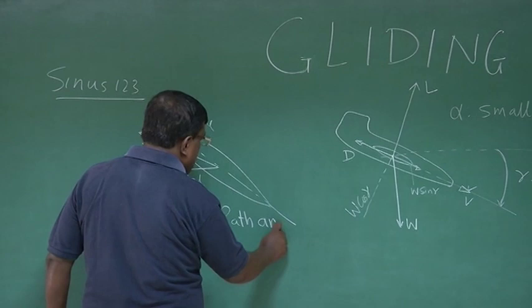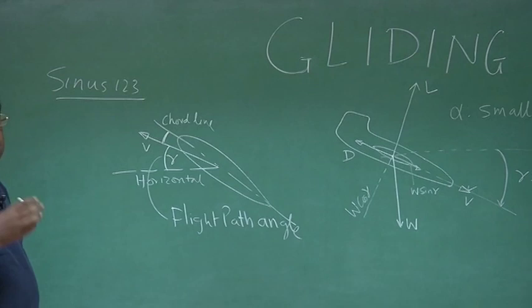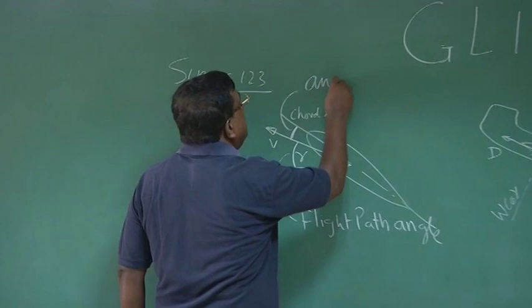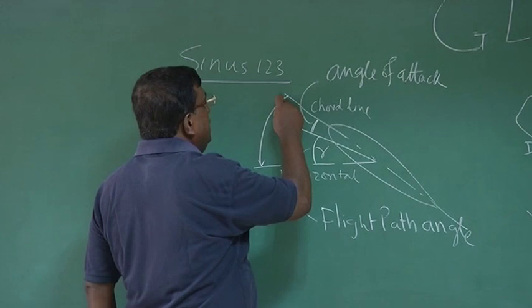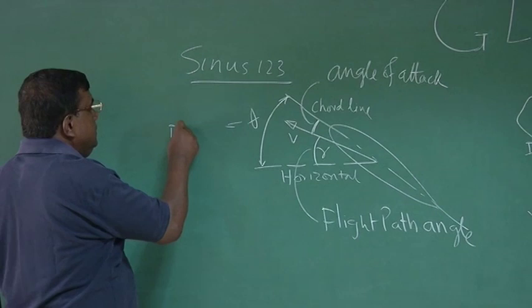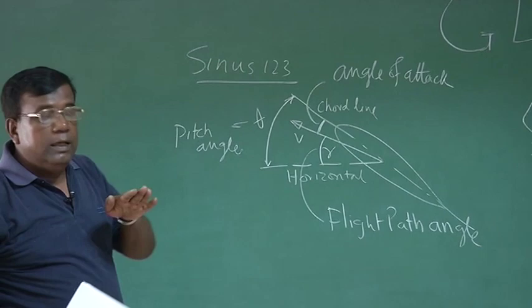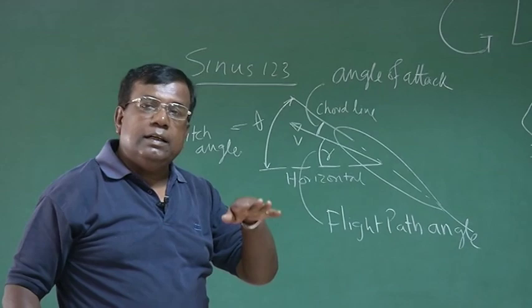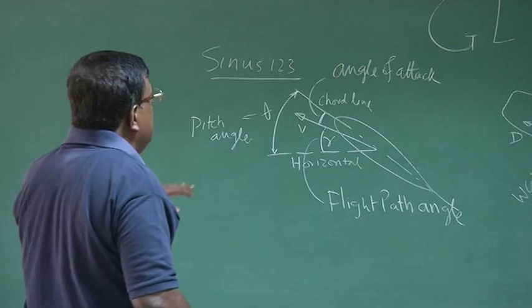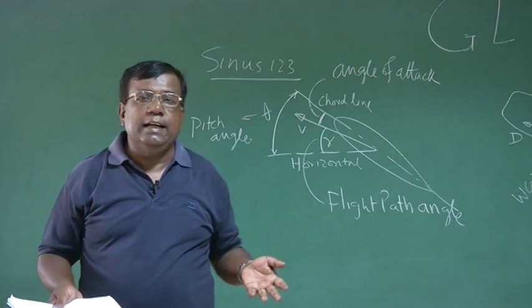If this is the velocity vector, and this is the chord line or reference line, and this is the horizontal, then this angle is gamma, which is called the flight path angle. This angle, that is chord line and velocity vector in the vertical plane, is called angle of attack. And this angle from chord line to horizontal, notation is theta, it is called pitch angle.